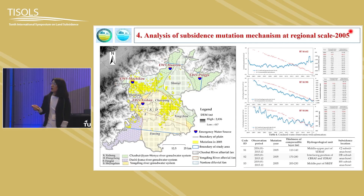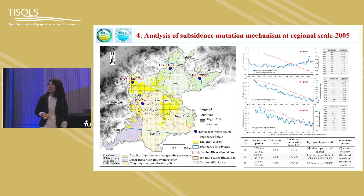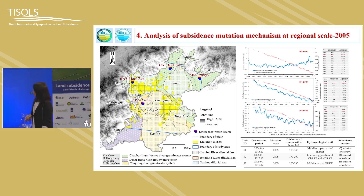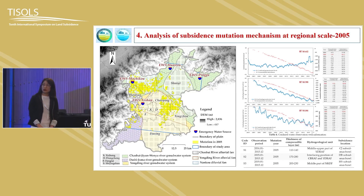We also collected stations one to three, all located in the yellow rectangles. We get the correlations between the two factors, which are relatively high in 2006 in the time series. Groundwater pumping is one of the inducements that makes the subsidence mutations occur in 2005.